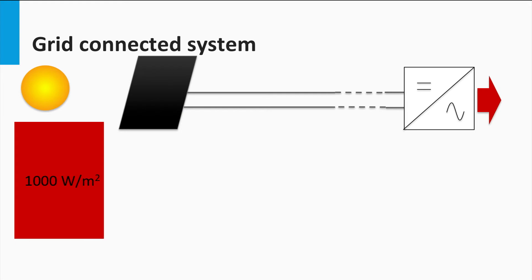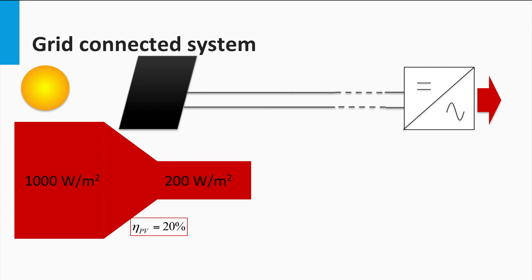Let's assume AM 1.5 irradiance levels and that the PV array is 20% efficient. Therefore, the power density present at the output of the PV array is 200 watts per square meter.